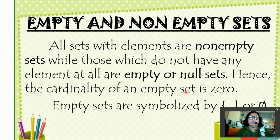Let's start with Empty and Non-Empty Sets. All sets with elements are considered Non-Empty Sets, while those which do not have any element at all are Empty or Null Sets. Hence, the cardinality of an Empty Set is 0. Empty Sets are symbolized by braces with no elements or this symbol.